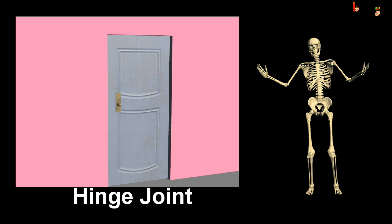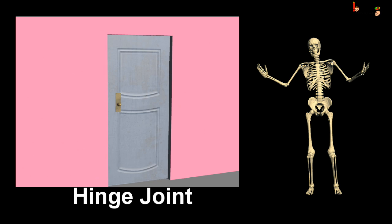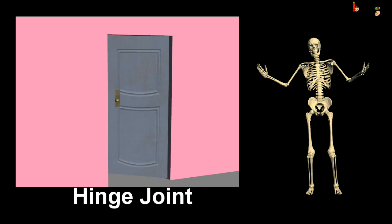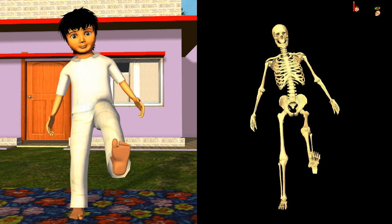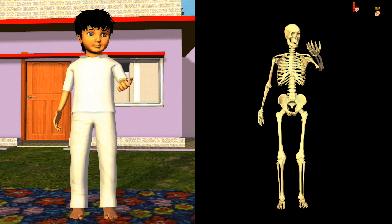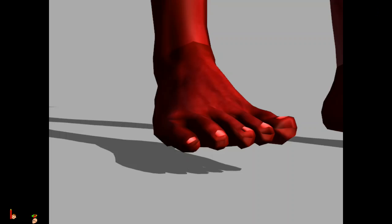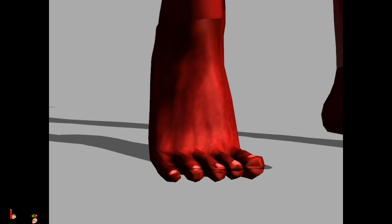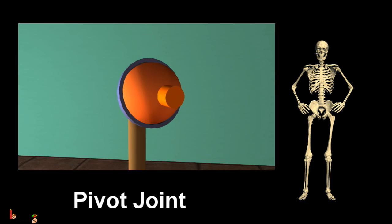You must have seen how a bowler in cricket bowls. He swings his hand freely around his shoulder and then finally throws the ball. The hinge joint works like a door on a hinge. It enables movement only in one direction. Knees, elbows, fingers, and toes in our body have hinge joints.